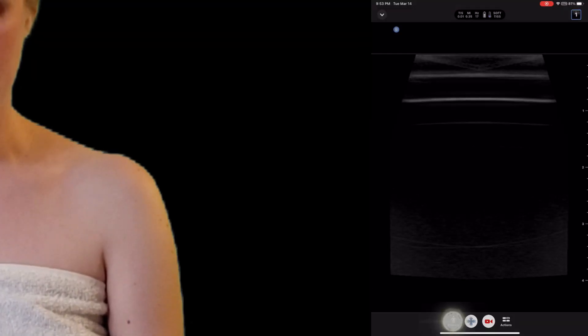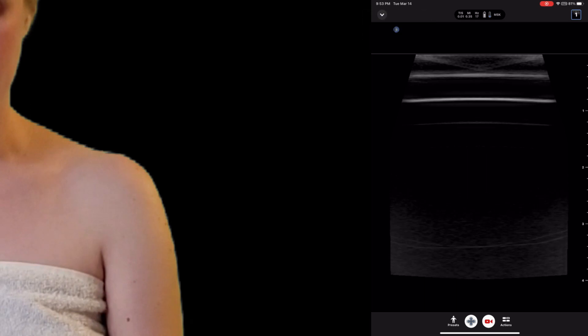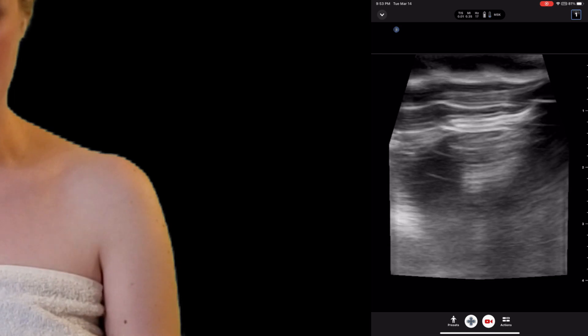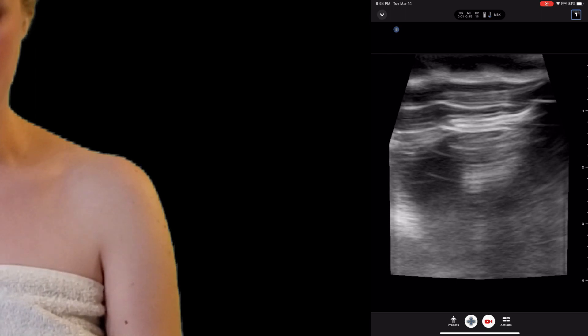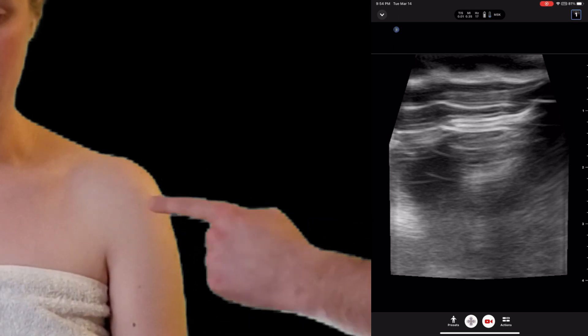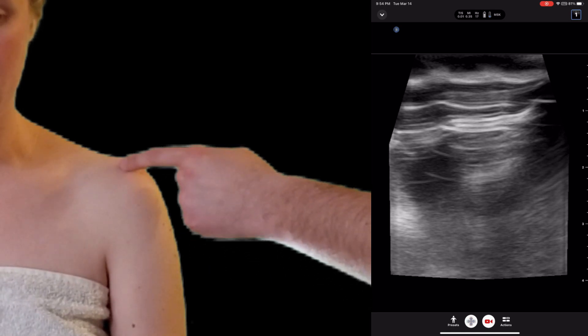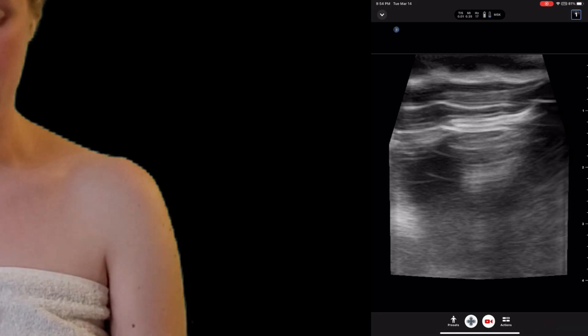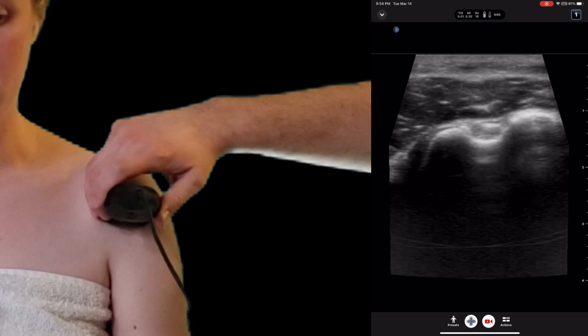So in evaluating for rotator cuff tear, you want to choose the musculoskeletal or the soft tissue preset. You want your marker dot to always be towards the patient's right or their head. You want to start home base as the biceps tendon or the bicipital groove. The subscapularis will be medial to that. Infraspinatus and teres minor will be lateral. And the supraspinatus will be superior to the bicipital groove, which is a U-shape on the humerus with the biceps resting comfortably inside.